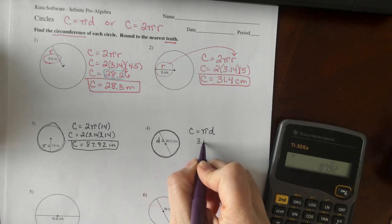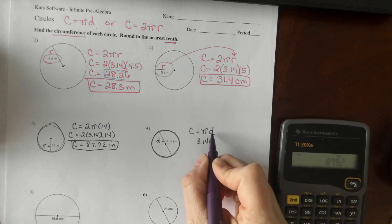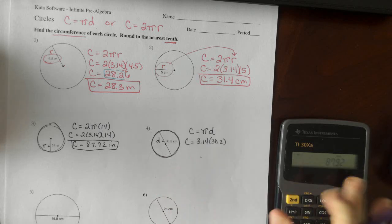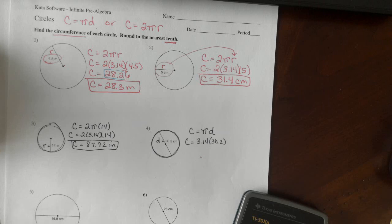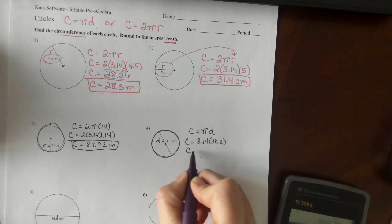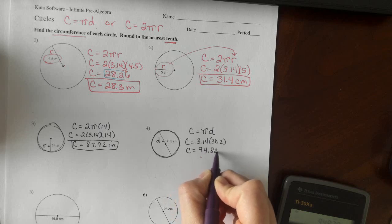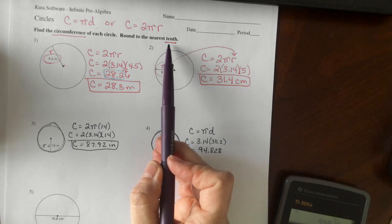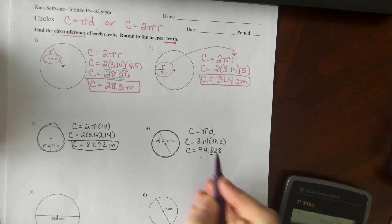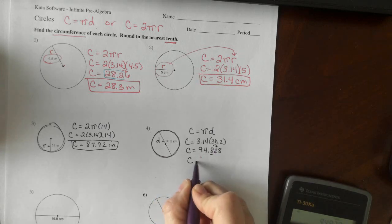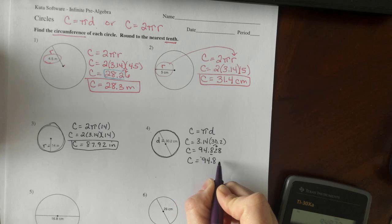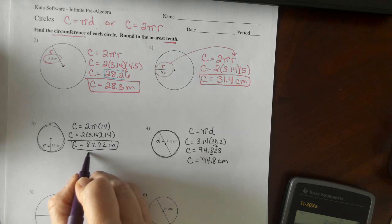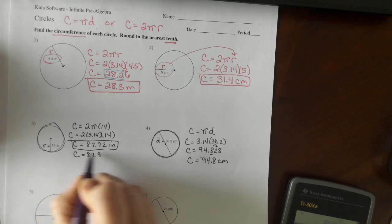Pi, we're going to utilize 3.14. The diameter is 30 and 2 tenths. We come up with 94 and 828 thousandths. I forgot that our directions ask us to round to the tenths, so we look to the right and keep our answer 94 and 8 tenths centimeters. The first one would actually stay 87 and 9 tenths inches.